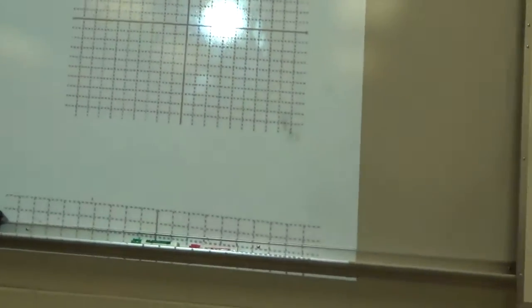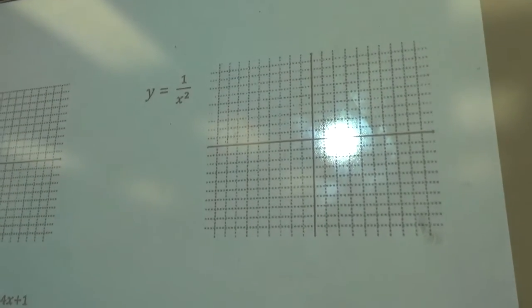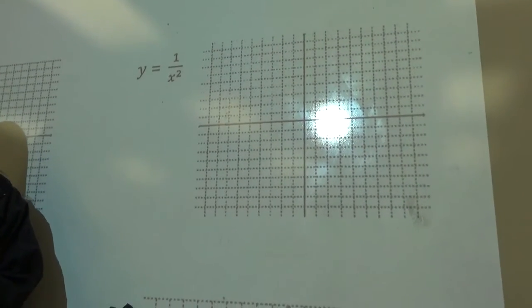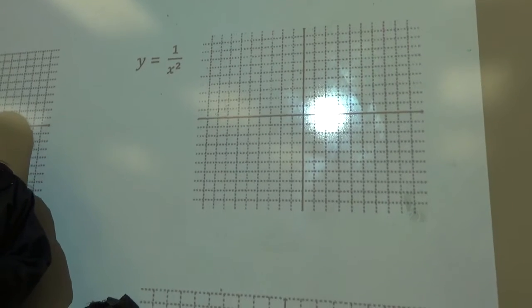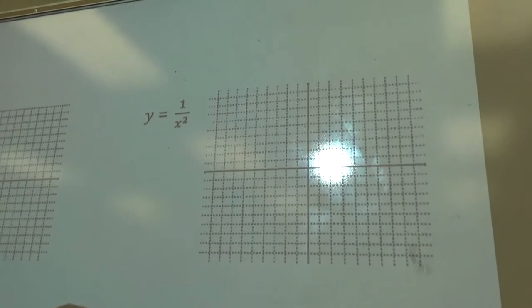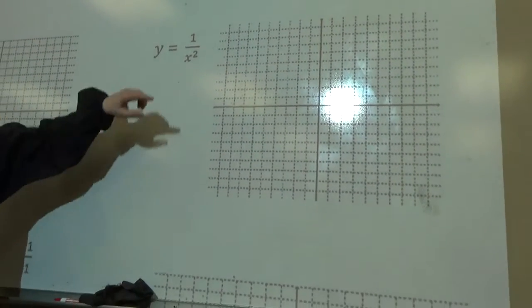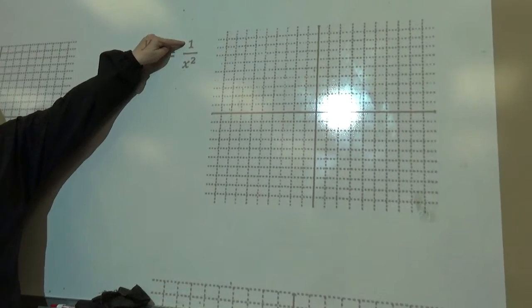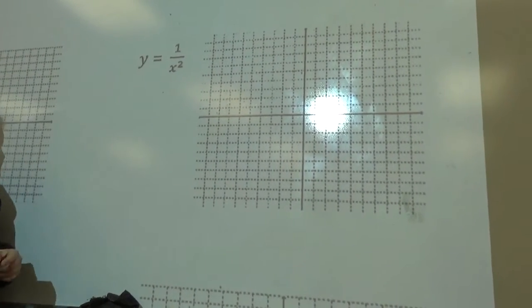Look at your notes, what's it say? How do I find zeroes? Zero of the numerator, right, for x-intercept? Zeroes of the numerator, so look at the numerator. Is there any way that can be zeroes? So no x-intercept.